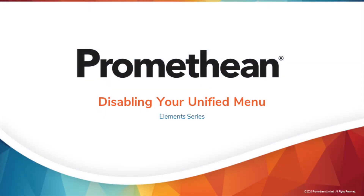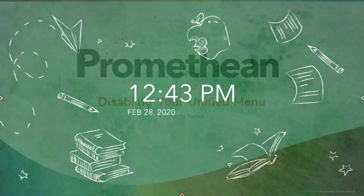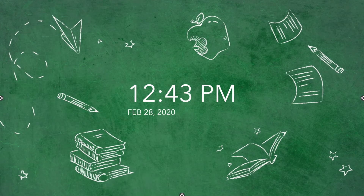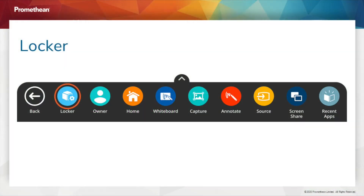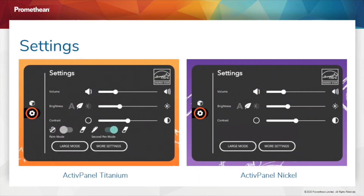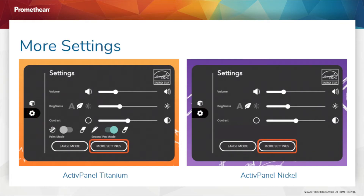There may be instances in which you wish to remove the Unified Menu from your Active Panel screen. To do this, access your Unified Menu, then tap Locker. Select the gear icon on the left to access Settings, then choose More Settings.